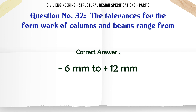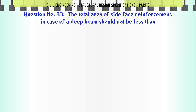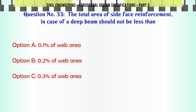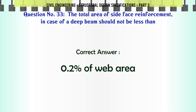The total area of side face reinforcement in case of a deep beam should not be less than: a. 0.1% of web area, b. 0.2% of web area, c. 0.3% of web area, d. 0.4% of web area. The correct answer is: 0.2% of web area.